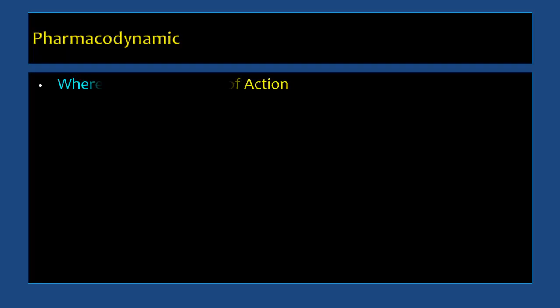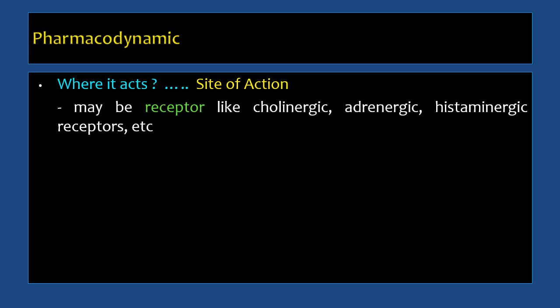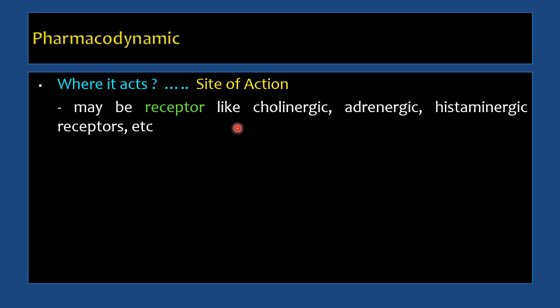Pharmacodynamics covers three aspects. First is where the drug acts — that means the site of action. The site of action may be receptors. These are the normal physiological sites — physiological receptors involved in the cholinergic system, adrenergic system, and serotonergic system. When those physiological receptors are occupied from outside by drugs, the effects of the system are modified.